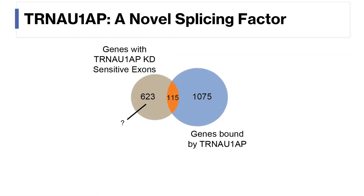The most interesting biology we found was definitely for tRNA1AP, which is an understudied protein previously characterized for its role in selenocysteine biosynthesis. Following Eclipse and knockdown RNA-seq, we found over 100 events with evidence for both binding and splicing modulation, providing good evidence that this is in fact a new splicing factor.